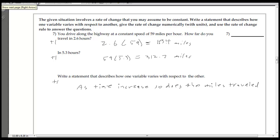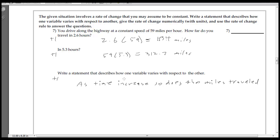And number seven, pretty much just drive 59 miles an hour for 2.6 miles, and there you go. And again, for that one, 5.3 times 59. And what's the relationship between these two variables as time increases? The miles traveled, or the longer you drive, the farther you go.